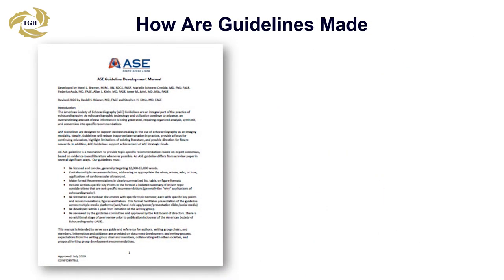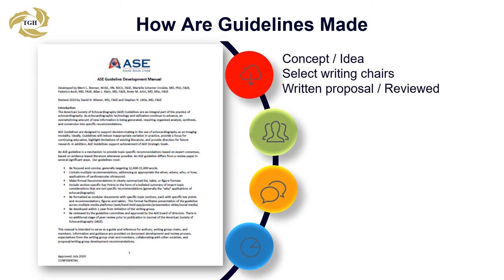So how are guidelines made? This involves a formal process based on the ASE guideline development manual. It is an orderly process which begins with a proposal — either a new idea or an update of previous guidelines — and the nomination of writing committee chairs who write and submit the proposal. The proposal is reviewed by the standards committee, modifications are made, and it is finally accepted.